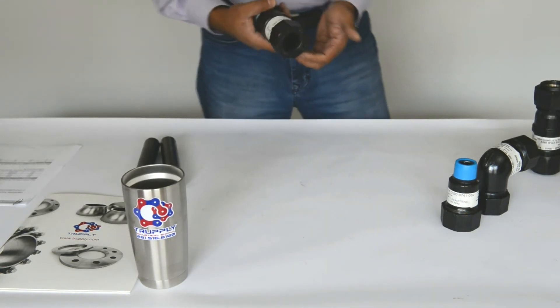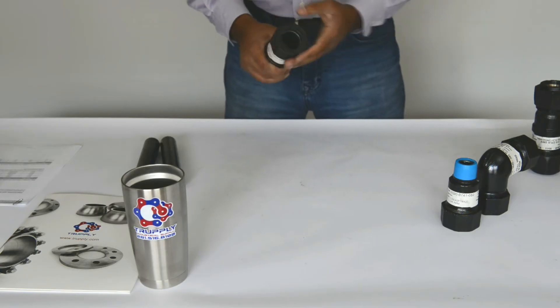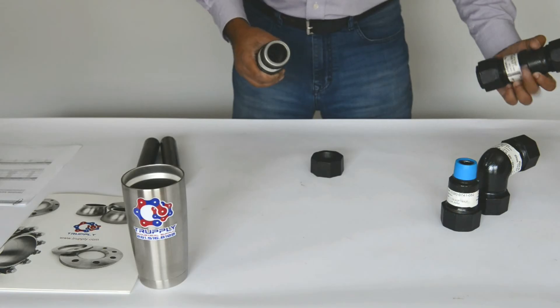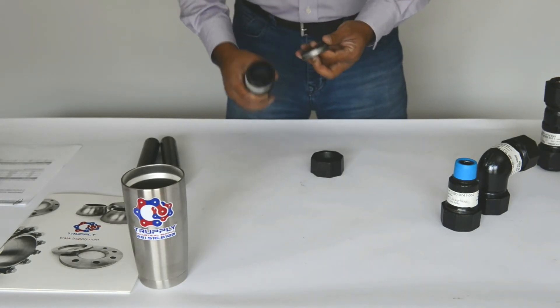Now this is a Style 90 regular coupling. This does not have a lock ring. That's the only difference between this one and the universal coupling.